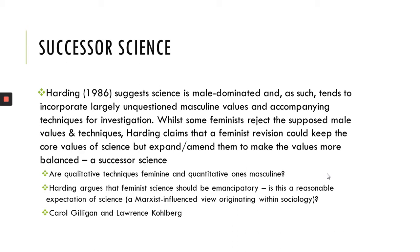Without realizing it, what Kohlberg had developed was an understanding of male ethics and male moral standards, and he had assumed this applied to women as well — but he hadn't checked. Gilligan conducted her own research and came to the conclusion that girls develop their own moral values, which continue into adulthood, and these ethical values of women are different from those of men. Her argument was that the ethical values Kohlberg described tend to focus on fairness, justice, and equality of distribution, whereas the values of girls and women tend to focus on caring, nurturing, and looking after the vulnerable.